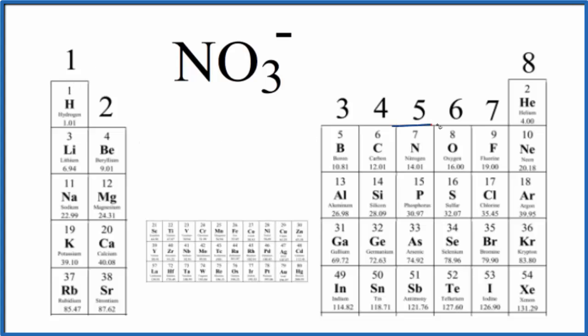We'll find nitrogen right here. It's in group 15, sometimes called 5A. It has five valence electrons. So nitrogen, five valence electrons.